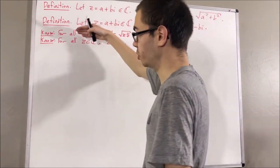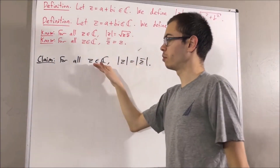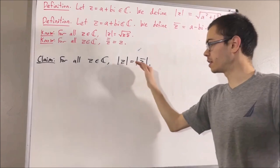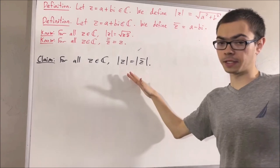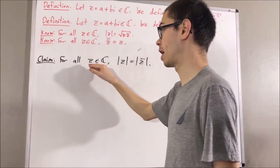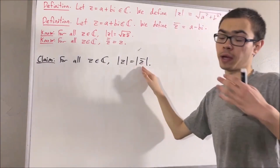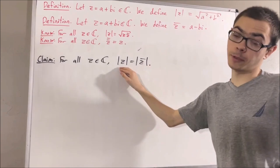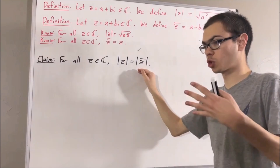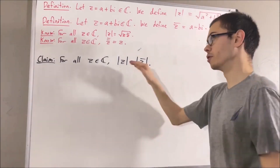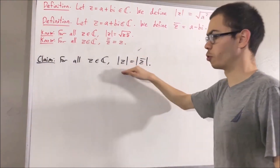From here we can use these two facts to prove the following claim: for all complex numbers z, the absolute value of z is equal to the absolute value of z bar. You could prove this directly by writing z equals a plus bi, so z bar equals a minus bi, and observing that the absolute value of z is the square root of a squared plus b squared, while the absolute value of z bar is the square root of a squared plus (negative b) squared — and those two are clearly equal. But instead we're going to use the two previous results to prove this.